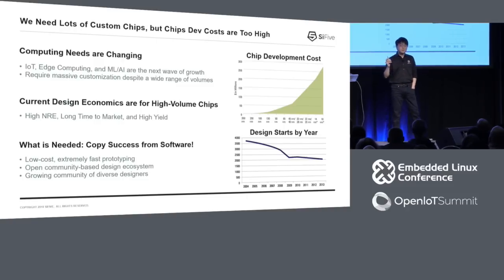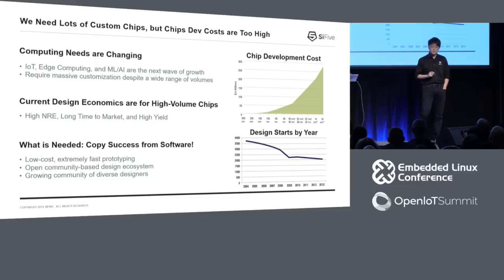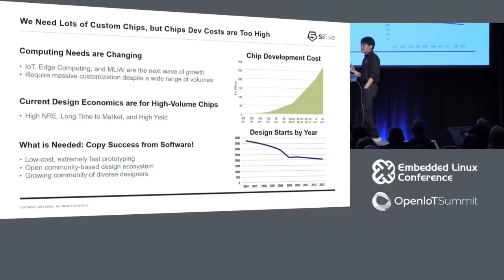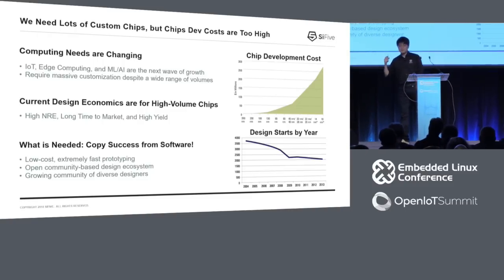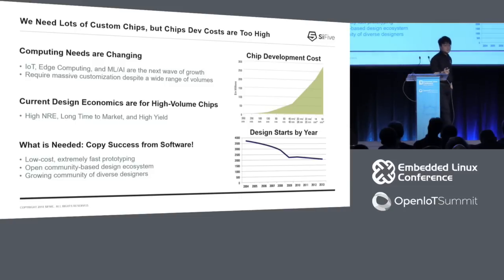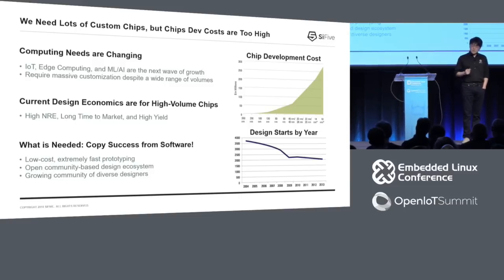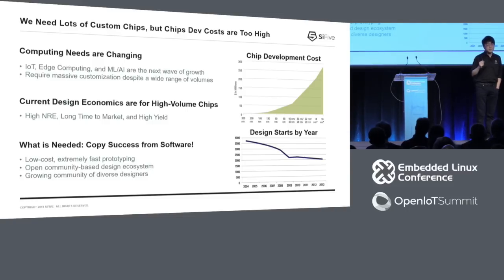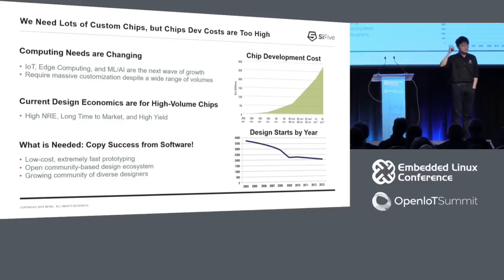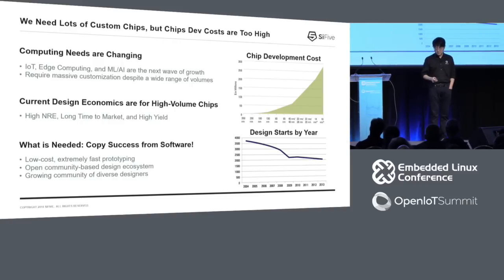To really make that formula work, what people do is spend a lot of money and have to sell a lot of those chips to make the economics work. Obviously that doesn't really work well for custom chips because, just inherently, you're not going to sell that many volumes of those chips — you're going to build your custom chip for just your application. You might have small volume or medium volume. So in order to really change the chip design economics to work for building lots of different custom chips, I'm proposing that the hardware industry needs to copy the success of the software industry.